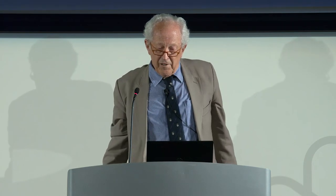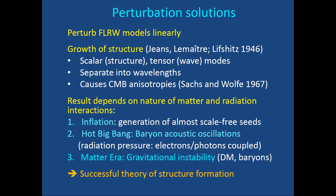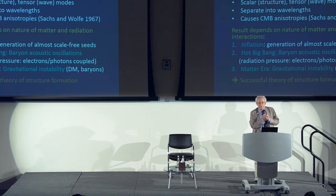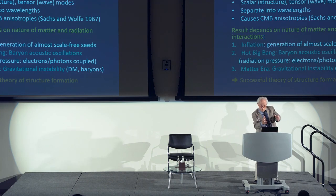Mathematicians perturbed the Robertson-Walker models to get lumpy models with more degrees of freedom, enabling models for the growth of structure — pioneered by Jeans, Lemaître, and Lifshitz. There are scalar modes leading to structure formation and tensor modes corresponding to gravitational waves. These perturbations cause anisotropies in the cosmic background radiation: looking across the sky, the CMB temperature is slightly different in different directions — caused by density fluctuations in the matter.